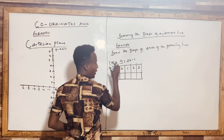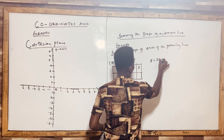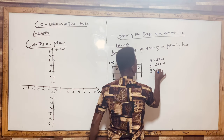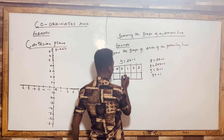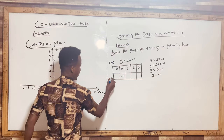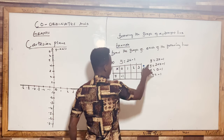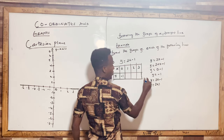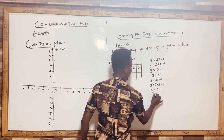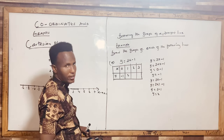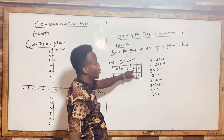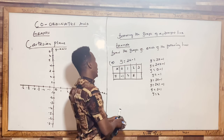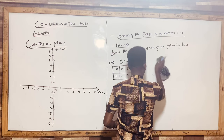When x = 0: y = 3(0) − 1 = 0 − 1 = −1. When x = 1: y = 3(1) − 1 = 3 − 1 = 2. When x = 2: y = 3(2) − 1 = 6 − 1 = 5. When x = 3: y = 3(3) − 1 = 9 − 1 = 8. I have now completed my table of values.